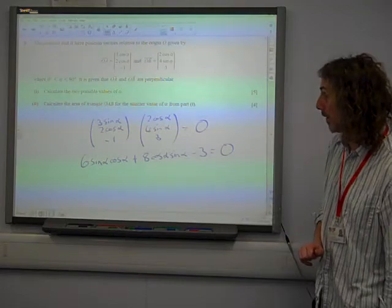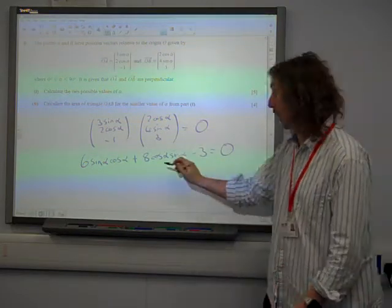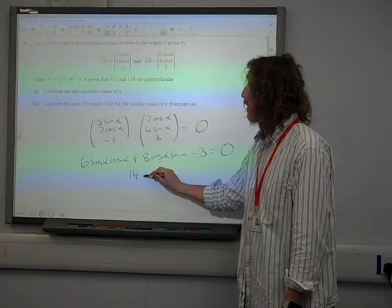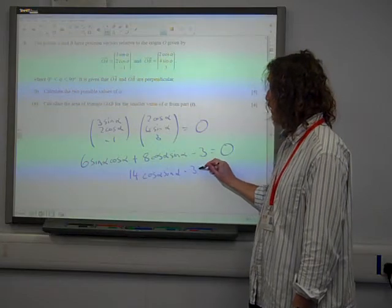Six sine alpha cos alpha plus eight cos alpha sine alpha minus three is equal to zero. Now of course, sine alpha cos alpha and cos alpha sin alpha are the same thing, so that's fourteen cos alpha sin alpha minus three is zero.